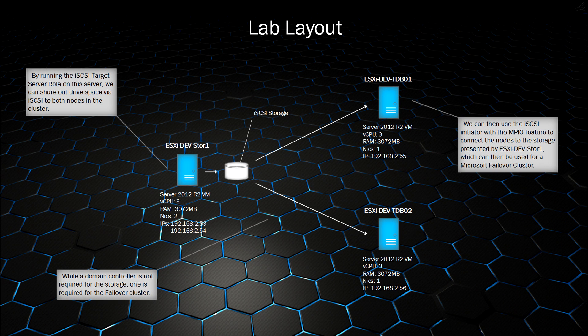This next slide is an overview of how I set the lab up. I have three Server 2012 R2 VMs running, all set up very similarly — three vCPUs, three gig of RAM. The storage server has two NICs, which comes into play when we set up the MPIO. By running the iSCSI Target Server role on our storage server (Store1), we can share our drive space via iSCSI to both nodes — TDVO1 and TDVO2. Once storage is configured, we use the iSCSI initiator along with MPIO to connect our nodes to the storage.